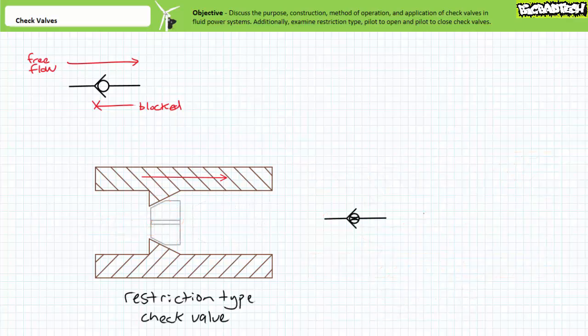Another type of check valve you may run across is something known as a restriction or orifice type check valve. This type of check valve is designed to purposely leak in the block direction. Upon first consideration, this might seem like an extraordinarily stupid idea. However, it does have its uses.